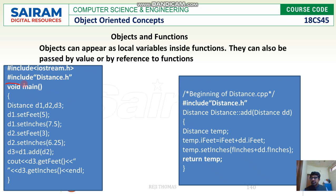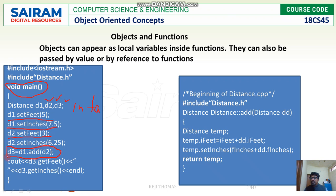We have the main program — we are not writing the actual class, just the main program. Inside the main program, d1, d2, and d3 are something like local variables — even though they are objects, they appear like local variables. This is similar to writing int a — a is a local variable for the function main. Look at the next statement: we are going to pass this object as pass by value. You can also pass this object as reference.